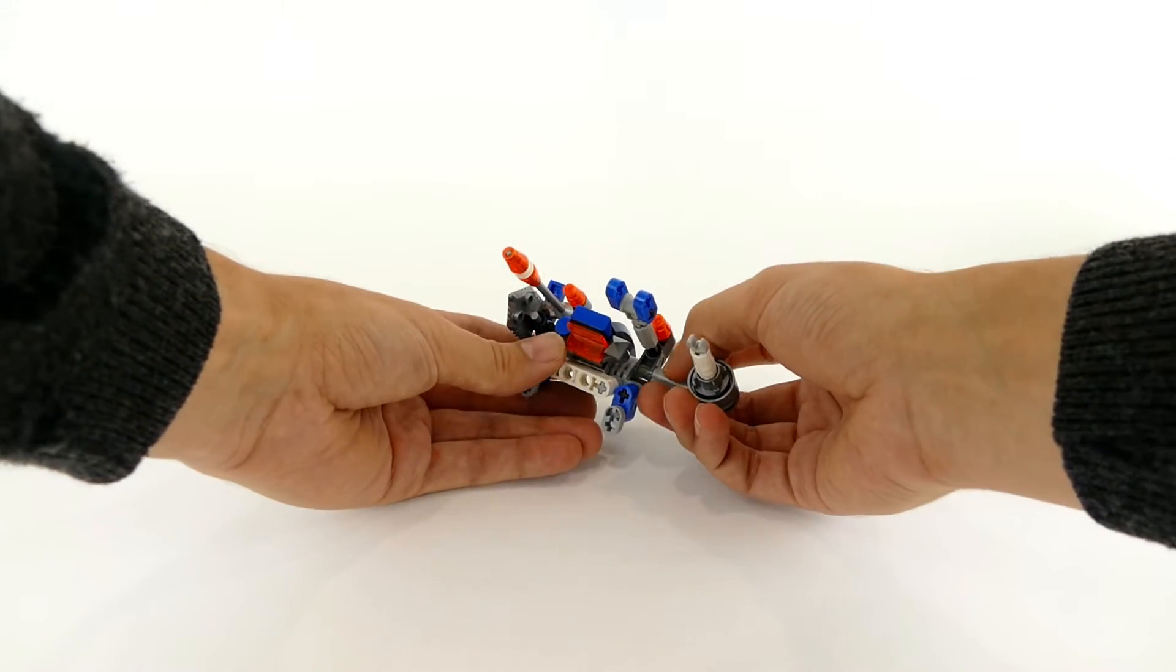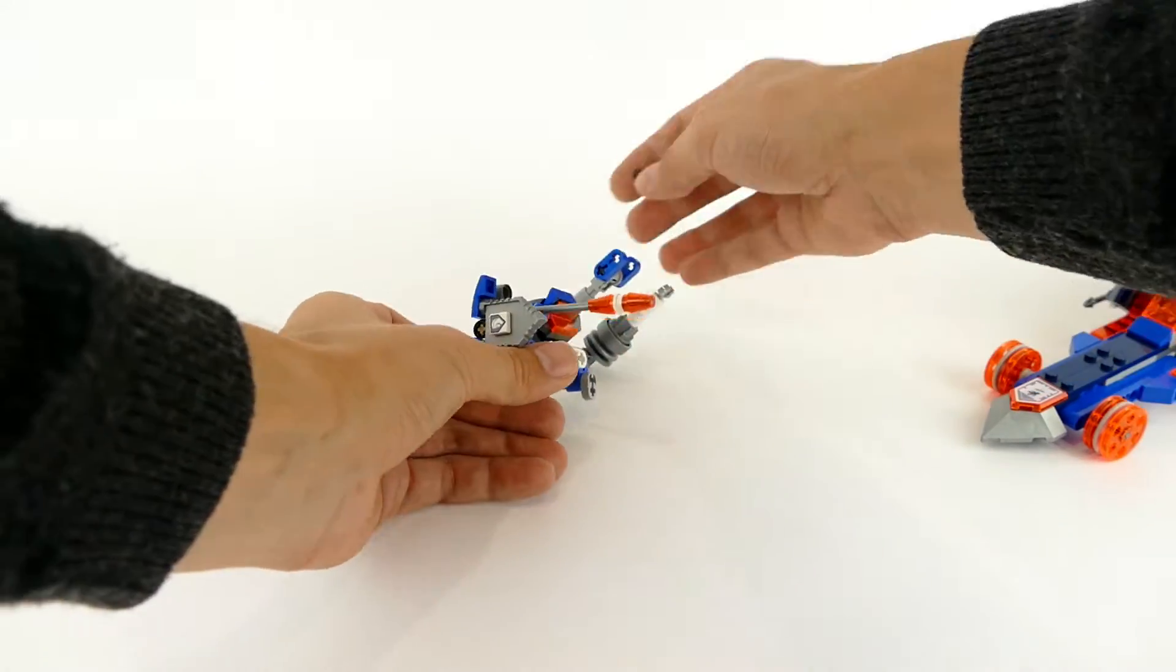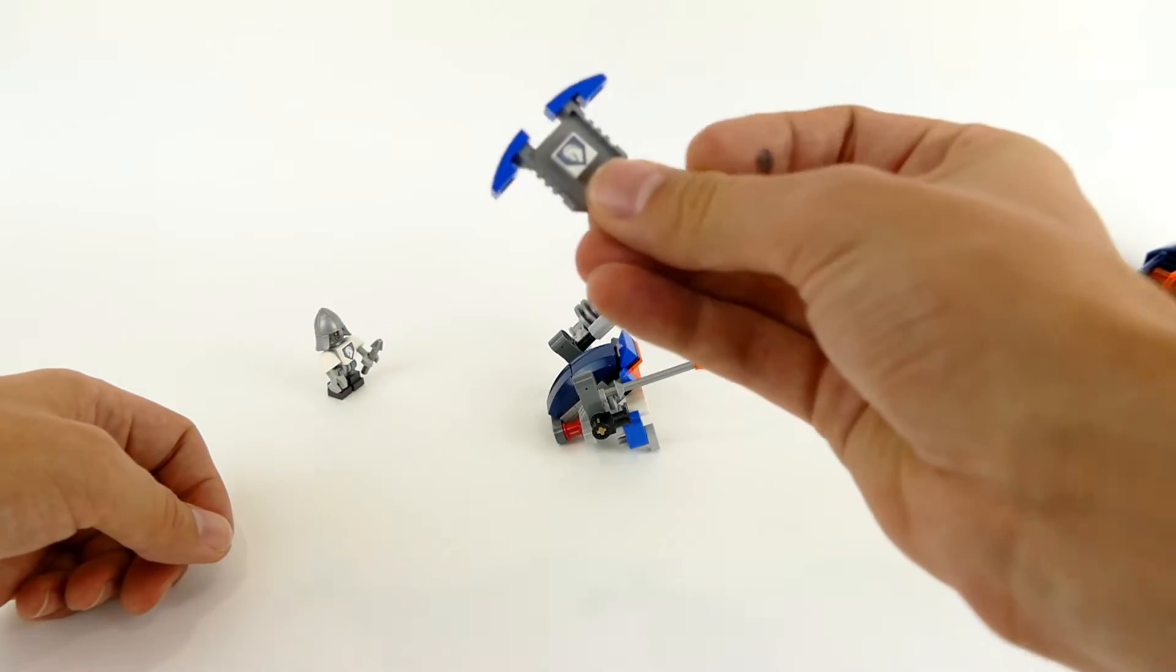You can launch the flicker missiles. And you can as well take off the adjustable shield that looks like this.